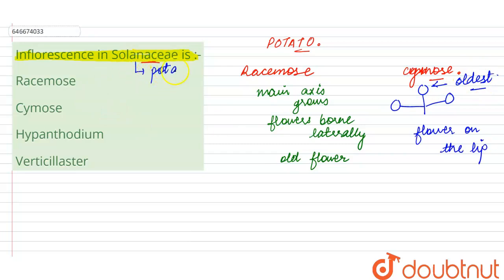Now here in case of family Solanaceae, which is a potato family, the inflorescence type is the racemose type. Option number one here becomes the right answer for this question, whereas cymose, hypanthodium, or verticillaster are the wrong options.